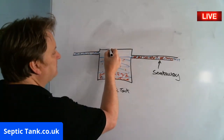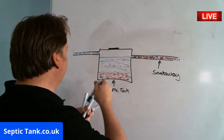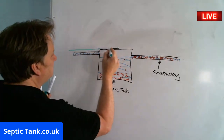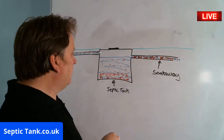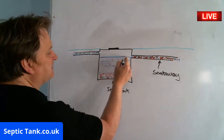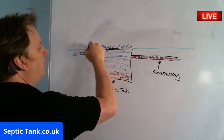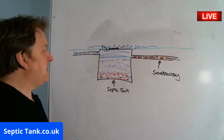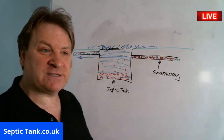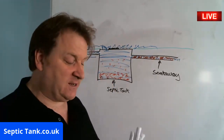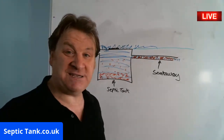So what happens is — this is your tank lid here, and this is the grass. The water will fill up in the septic tank because it can't soak away, and it'll bubble up and overflow onto the grass. It will also go back towards the house, so you won't be able to flush your toilets anymore. That is why your septic tank is overflowing.